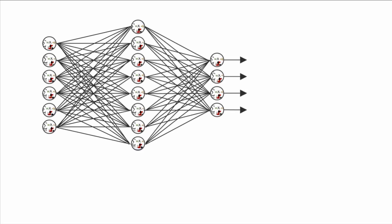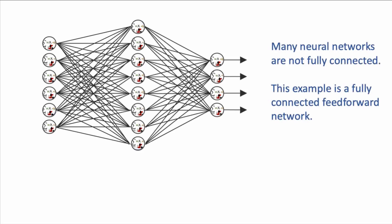Let's look at this example of a fully connected feedforward neural network. Just as a reminder, not all neural networks are fully connected. So this means that for many neural networks, neurons are connected only to some of the neurons in the subsequent layer.